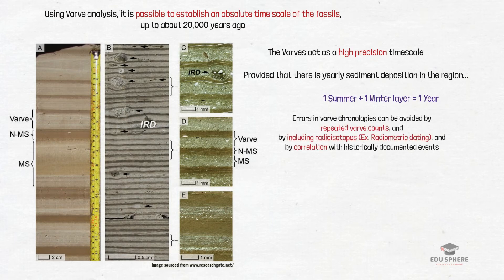Sources and influences of possible errors in varve chronologies are best determined and constrained by repeated varve counts and by including radioisotopes and by correlation with historically documented events.